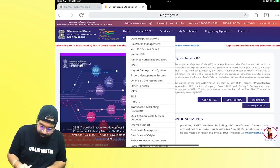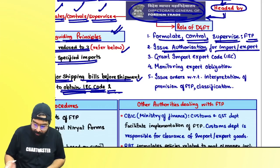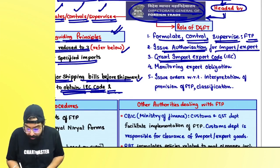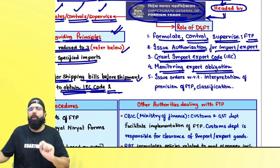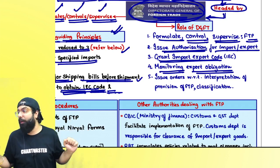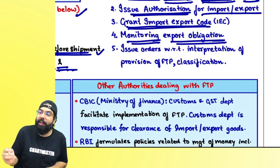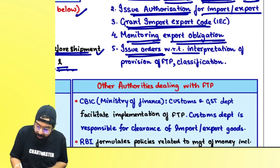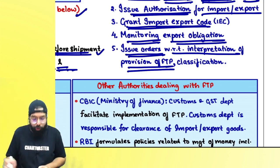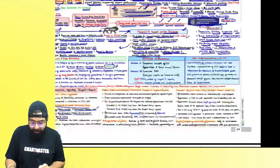DGFT has regional offices as well as a head office. You can go to the regional office to apply for an advance authorization online. DGFT also grants import-export codes, monitors export obligations, issues orders regarding interpretation of provisions of foreign trade policy, and can help with classification of goods. You can go online and apply for these at DGFT.gov.in.